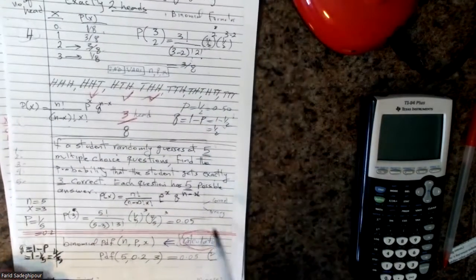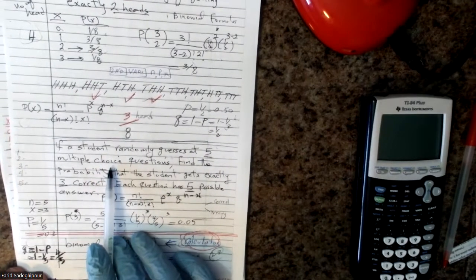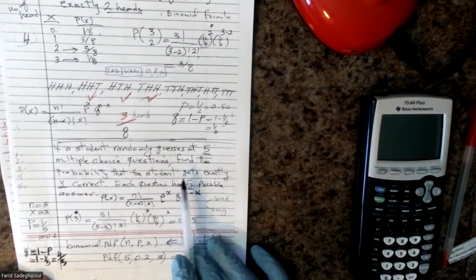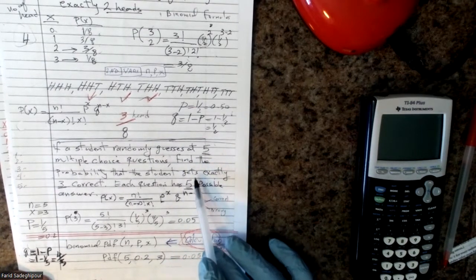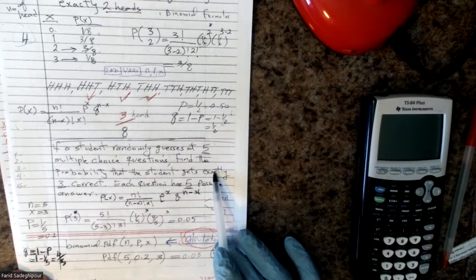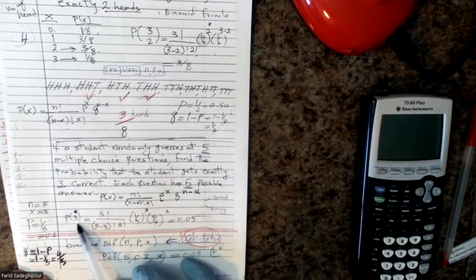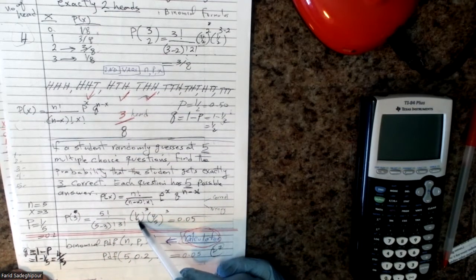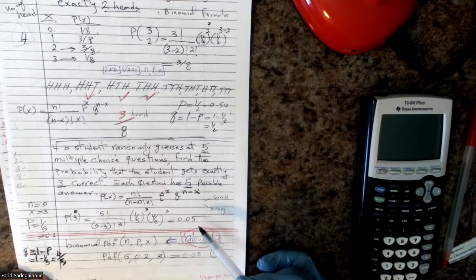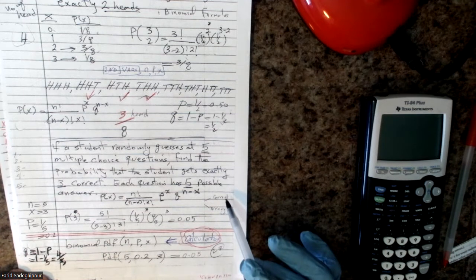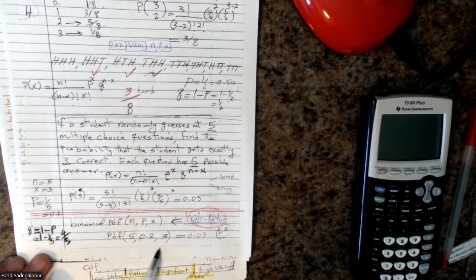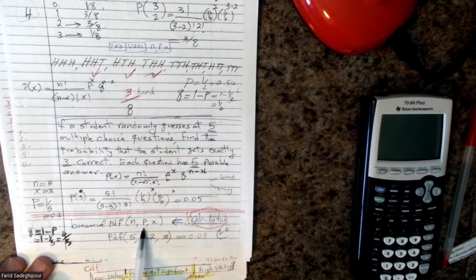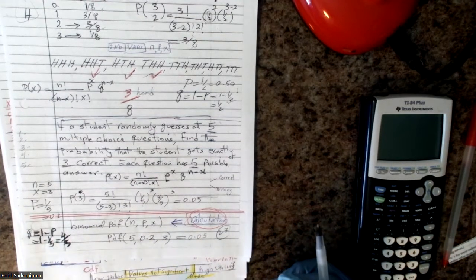This problem involves guessing at five multiple choice questions. When you answer a question, your answer is either correct or wrong — again, it's binomial. The probability of getting the correct answer is one out of five, since there are five choices. Using the calculator with n equals 5, p equals 0.2, and x equals 3, you get a probability of 0.05.